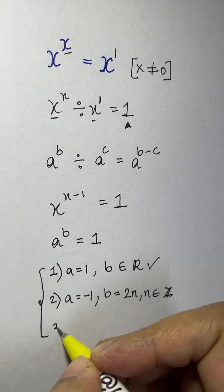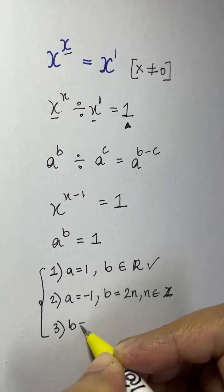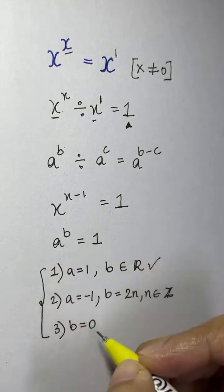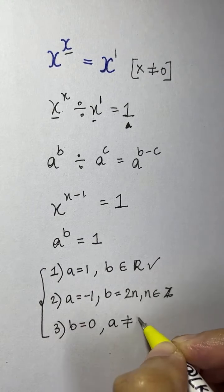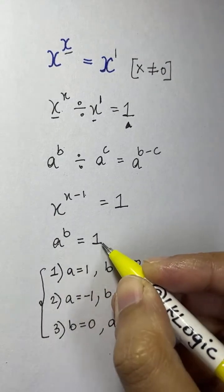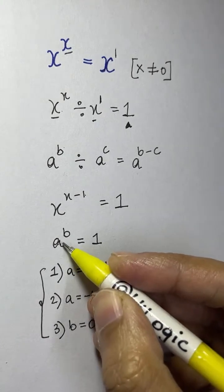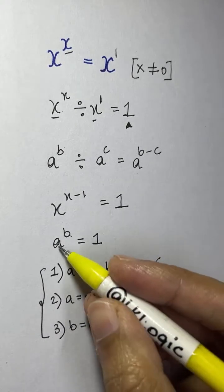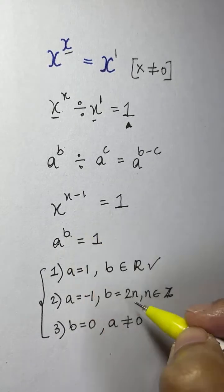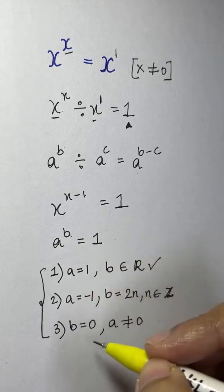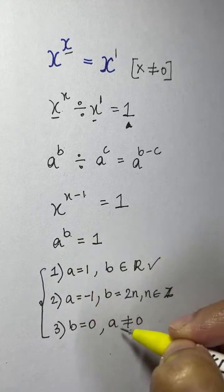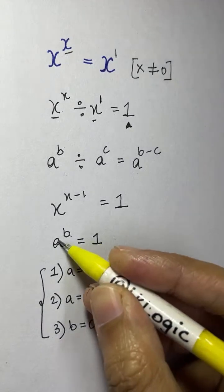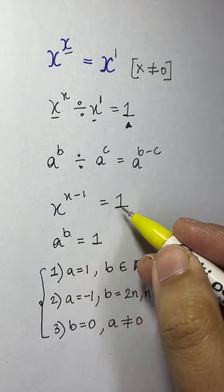The third condition: if b equals 0 and a should not be equal to 0, then the equation equals 1. So to summarize: if a equals 1 and the exponent is a real number, it equals 1. If a is negative 1 and it has an even power, it equals 1. If b equals 0 but a is not equal to 0, then it equals 1. These are the three conditions when the equation equals 1.